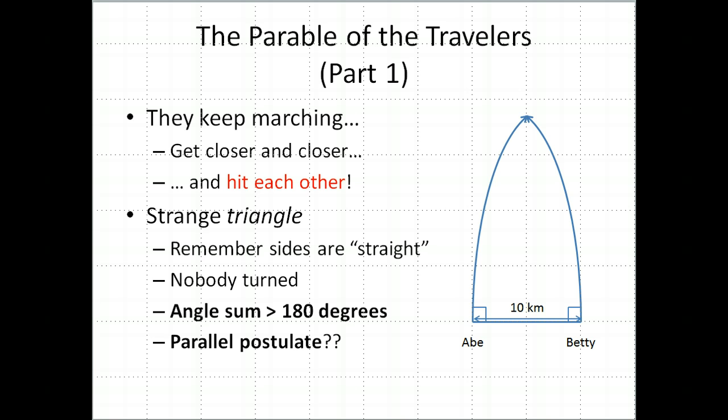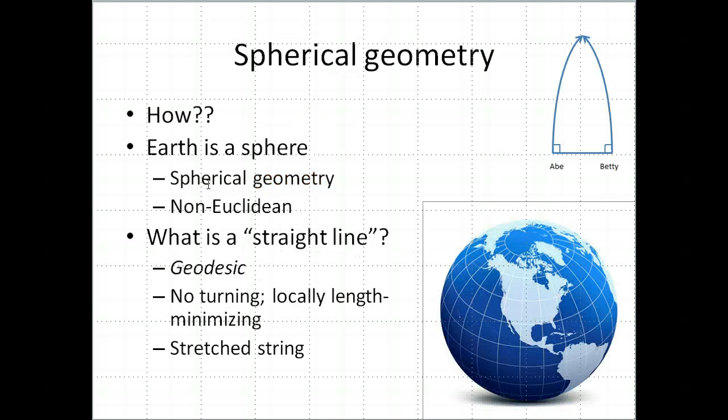So what's going on here? Well, what's happening is, of course, they're doing this on the surface of the Earth, and the Earth is a sphere. And its geometry is absolutely not Euclidean geometry. It is curved, and it doesn't obey the usual rules of straight lines and angles and triangles and rectangles that planar geometry does.